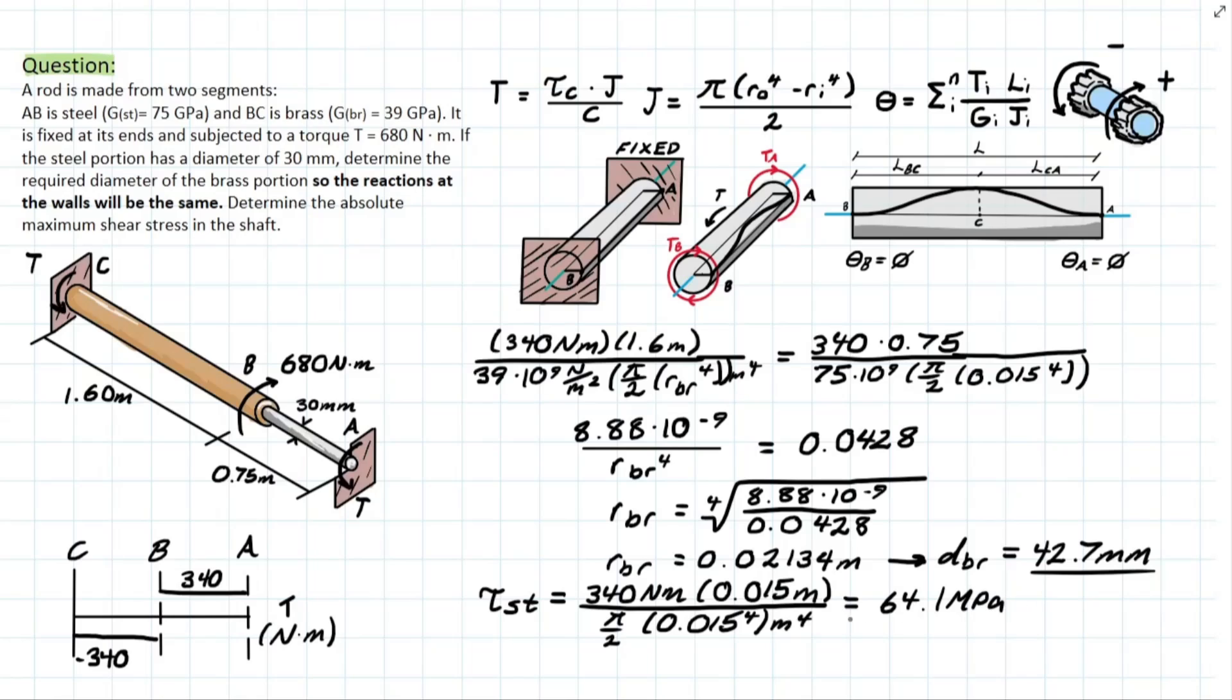Now we're going to use this shearing stress to compare to the shearing stress that develops in the brass section. The only difference is now we're considering section CB for the brass which still has the same torque applied of 340, except now our radius is going to be different which is 0.02134. And this is all going to be over the polar moment inertia, and the radius once again, and that's going to be to the power of 4. Solving that, you're going to be left with 22.3 MPa which is less than the shearing stress developed in the steel.